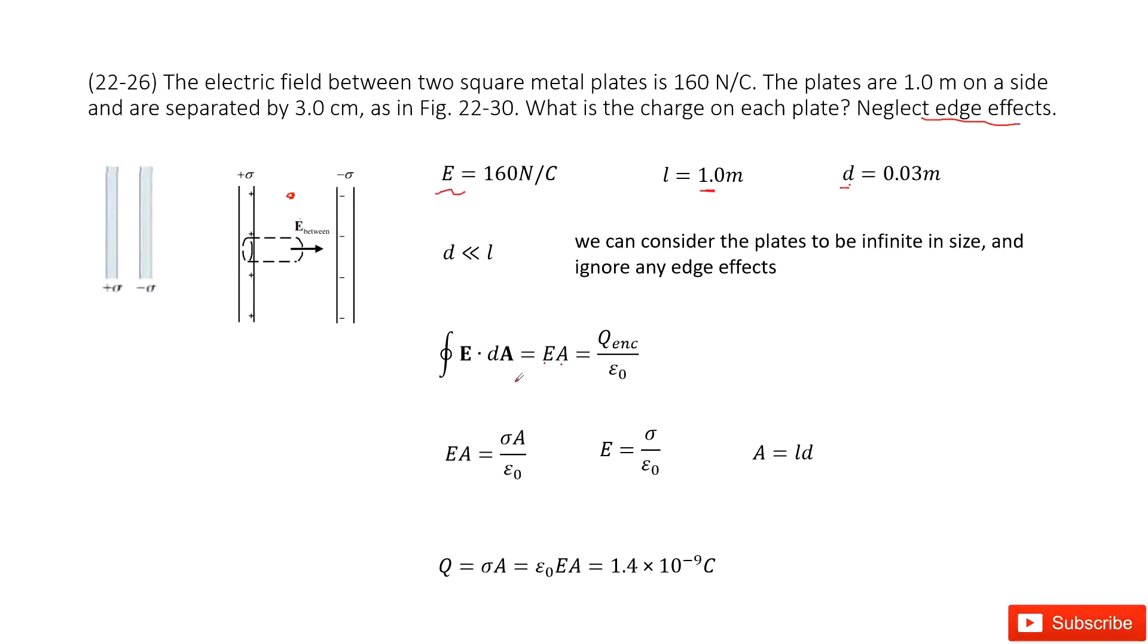We replace the enclosed charge as the surface charge density times A. Therefore, we can get E equal to sigma divided by epsilon naught. This is what we learned in previous problems.